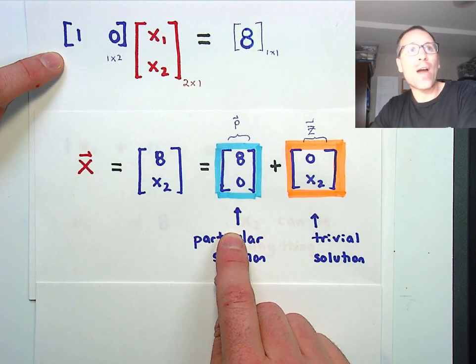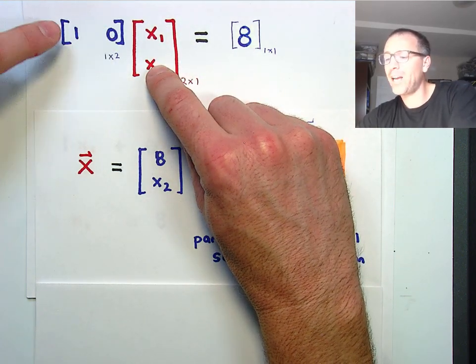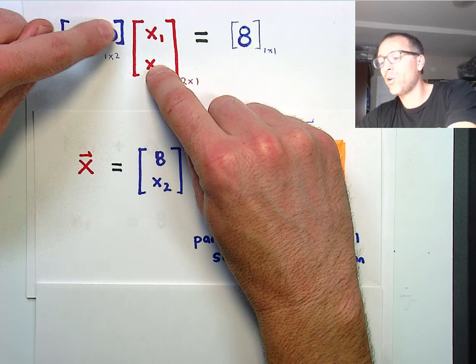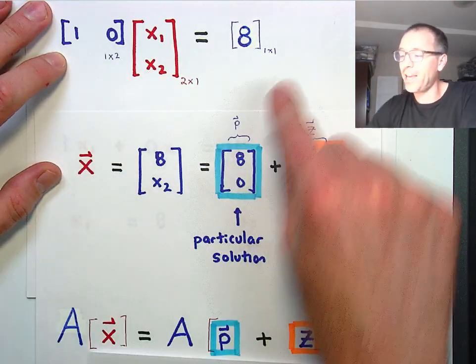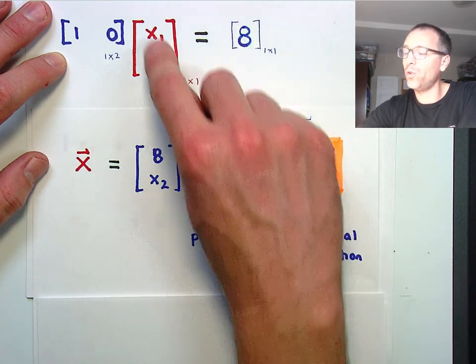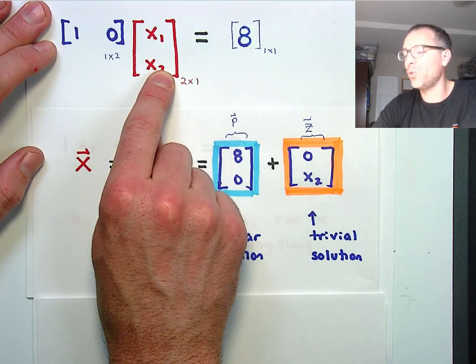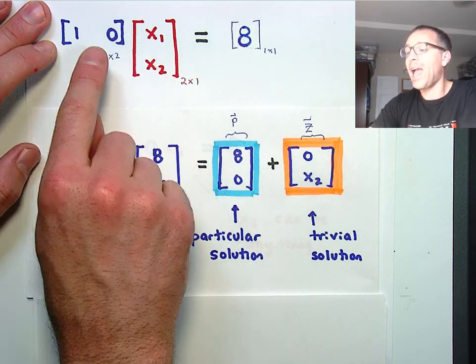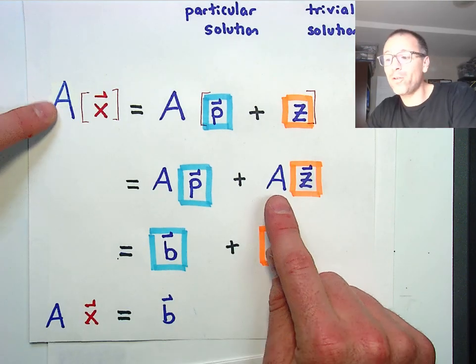And that kind of checks out, right? Because if I take 8 comma 0, 8 comma 0 times 1, 0 on the left hand side, 1 times 8 is 8. 0 times 0 is 0. 8 plus 0 is indeed 8. So that if I take 0 comma x2, 0 comma x2, 1 times 0 is 0. 0 times x2, doesn't matter what x2 is, goes to 0. 8 plus 0 is indeed 8.